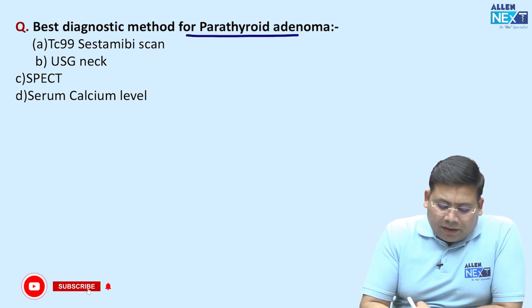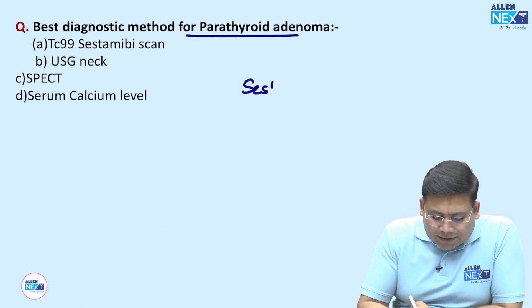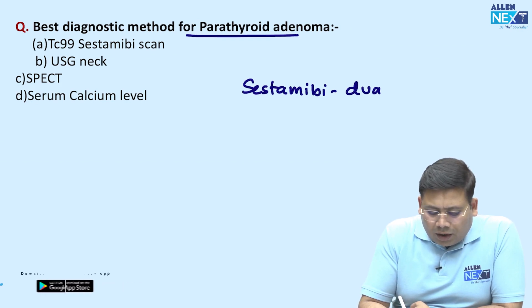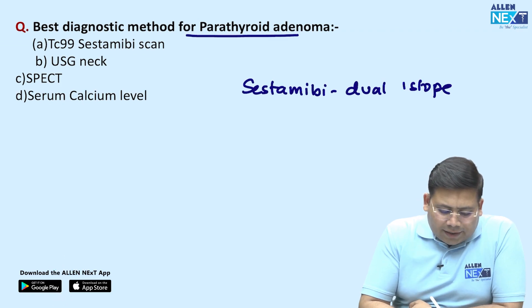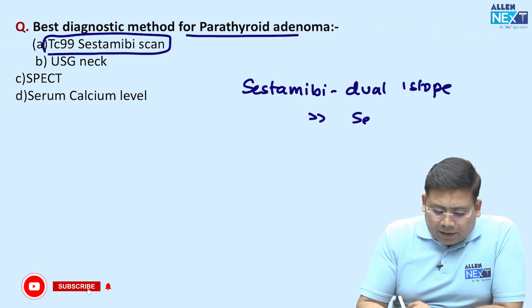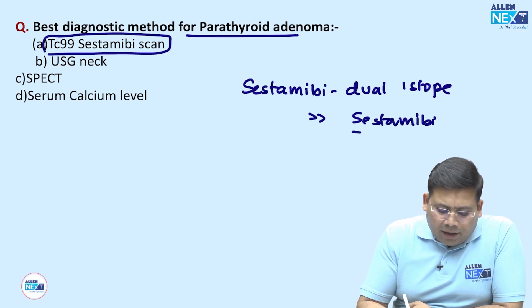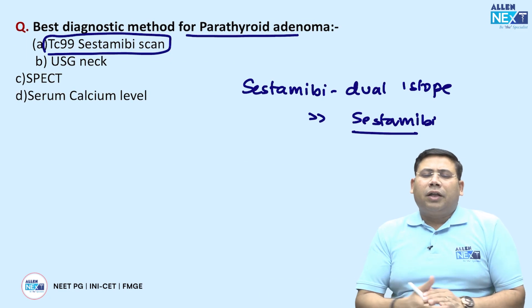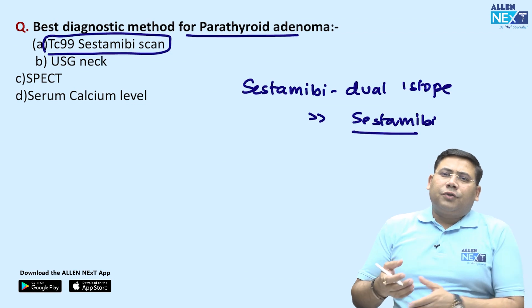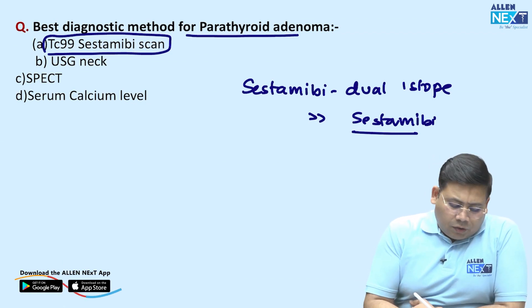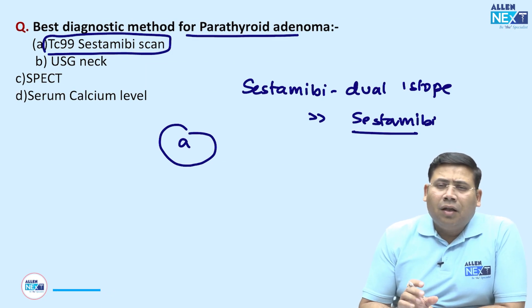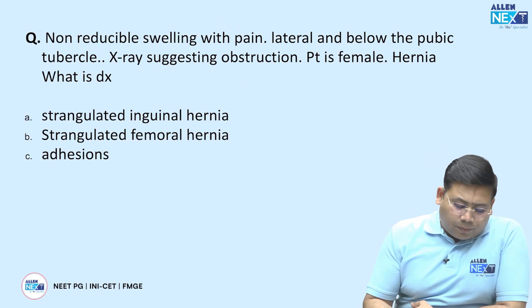The best diagnostic method for parathyroid adenoma is Sestamibi — specifically the dual isotope scan using Technetium-99 Sestamibi. The dual isotope Sestamibi scan is far better than Sestamibi alone. SPECT alone is not useful; it should be Sestamibi SPECT. Technetium-99 Sestamibi scan is the most sensitive test amongst the options given.